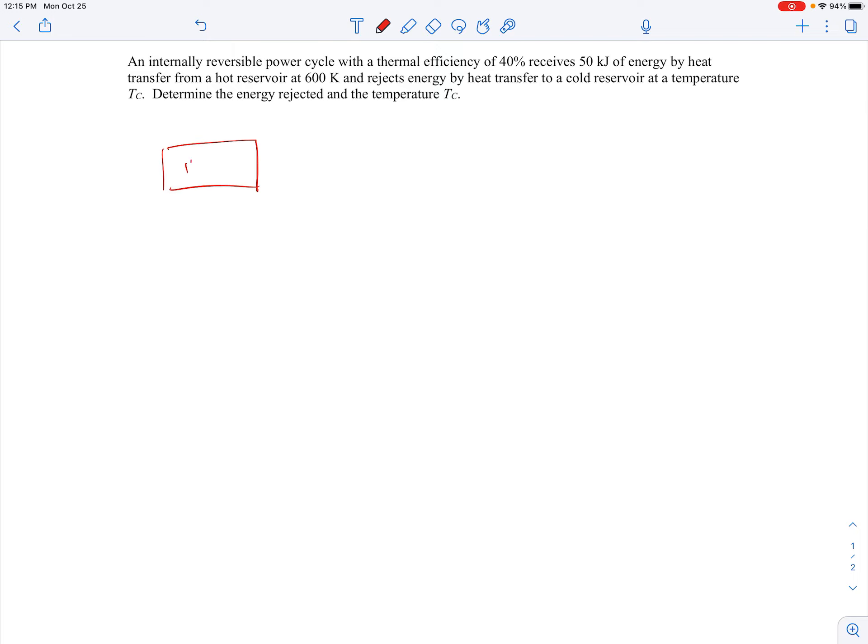So let me sketch this out. Here's our hot reservoir, and it's at TH is 600 Kelvin. You know what, let me make that bigger. Here's our hot reservoir, TH equals 600 Kelvin, and we're getting 50 kilojoules of energy from that hot reservoir into our power cycle.